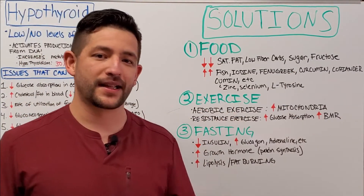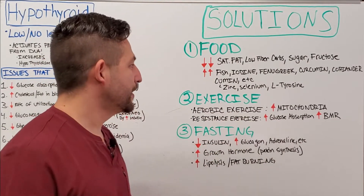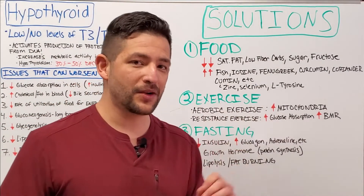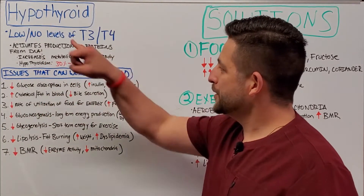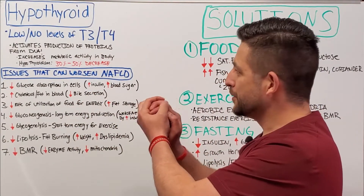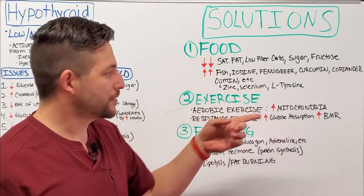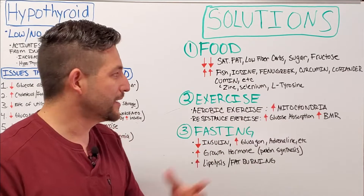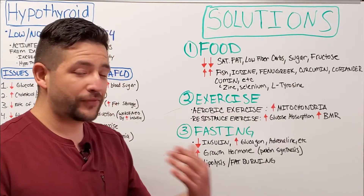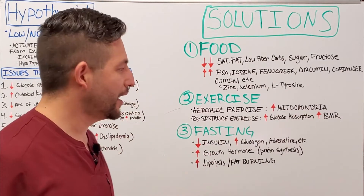Zinc and selenium are really important micronutrients used by your thyroid to help synthesize T3 and T4 — many people are actually deficient in these, so make sure you have adequate amounts. L-tyrosine is an amino acid that is also important: your thyroid produces T3 and T4 by combining iodine with a protein called thyroglobulin, which is synthesized using L-tyrosine. L-tyrosine is naturally found in dairy products, eggs, and protein foods — if you're vegetarian or vegan, supplement it or eat foods that contain it.